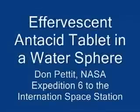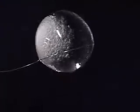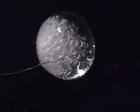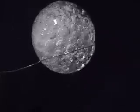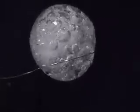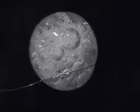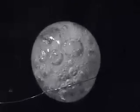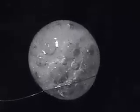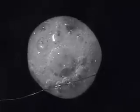Effervescent antacid tablet in a water sphere. Here's a sphere of water 50 millimeters in diameter with an effervescent antacid tablet. Bubbles form rapidly from a chemical reaction. This is an example of heterogeneous nucleation where bubbles form on a solid surface and can get a momentum exchange and travel out into the fluid.